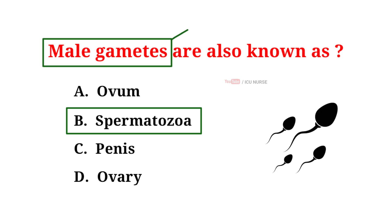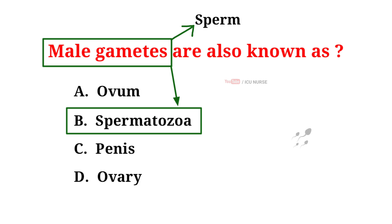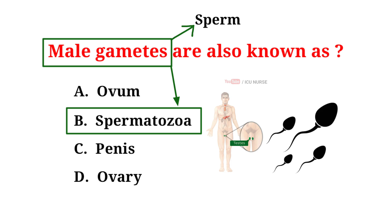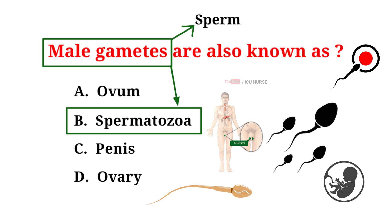Male gametes are also known as sperm or spermatozoa. Sperm are tiny tadpole-like cells produced by the testes, and they carry genetic information. During fertilization, sperm unite with female gametes to form a zygote. Sperm have a tail for swimming towards the egg. Understanding sperm is essential for reproductive biology.